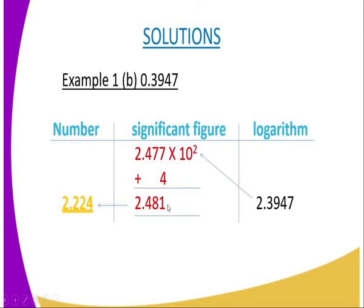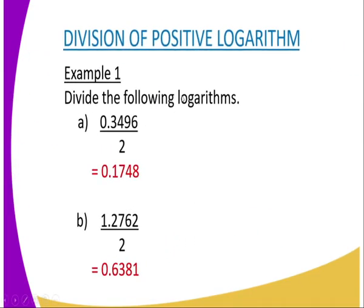Remember there is 10 to the power 2, so we write 2.481 times 10 squared. There was an error shown on screen — you must multiply by 100. Therefore the correct answer is 248.1, not 2.224 as previously displayed. I have clarified that typing error.